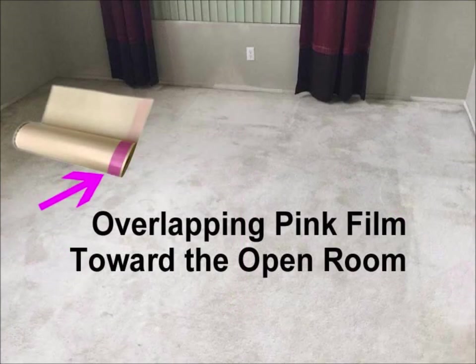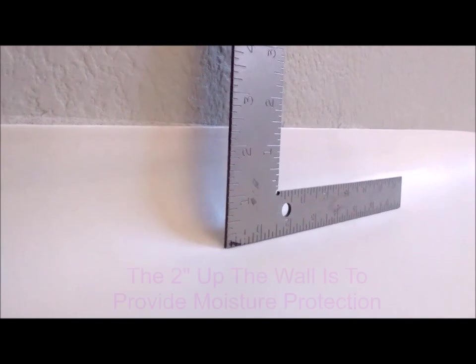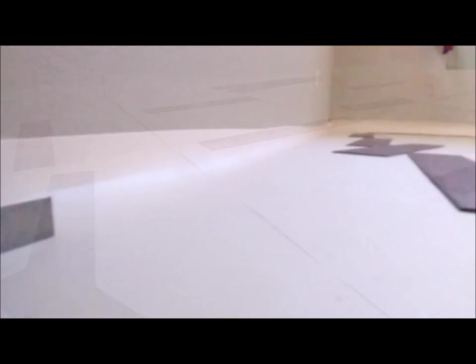I started in the corner on the left side next to the wall. I rolled out the underlayment making sure the pink side was facing down. Be sure to leave at least two inches going up the wall when you install the underlayment.